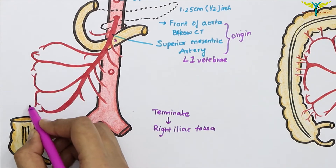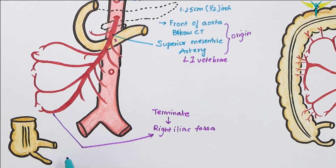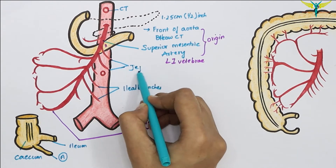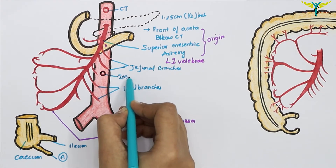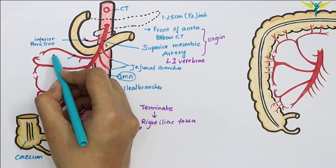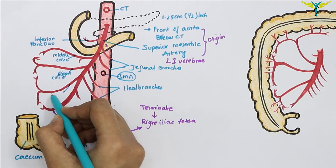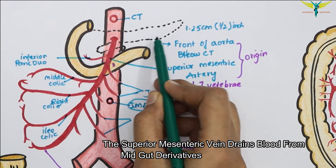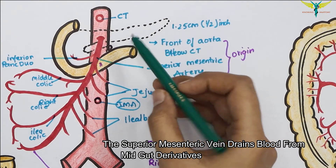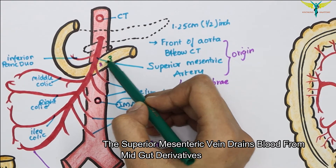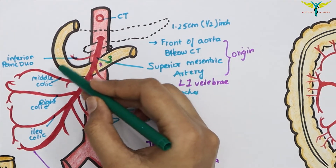In the diagram, we can see the ileum, appendix, cecum, ileal branches, and jejunal branches. The origin of the inferior mesenteric artery (IMA) is also visible, along with the inferior pancreaticoduodenal artery, middle colic artery, right colic artery, and ileocolic artery. Anteriorly from above, it is related to the body of the pancreas and the splenic vein. Posteriorly from above, it is related to the left renal vein, the uncinate process of the pancreas, the third part of the duodenum, the inferior vena cava, and the right ureter.